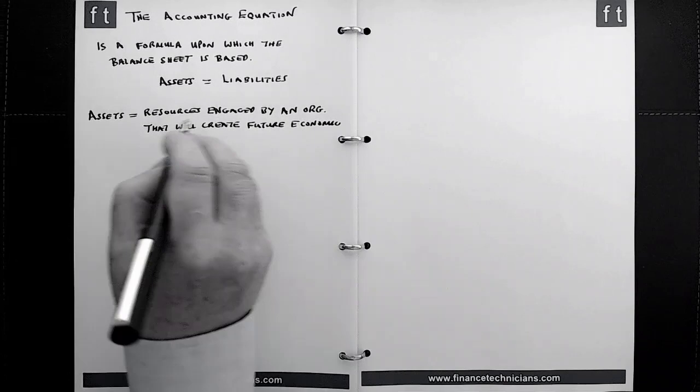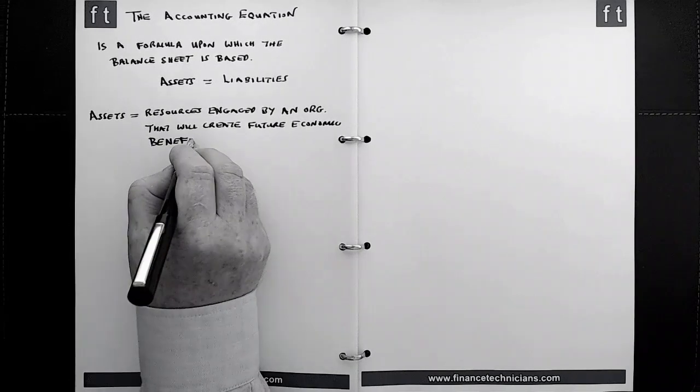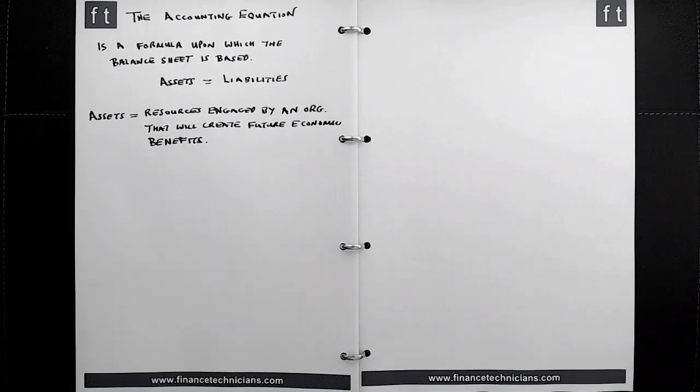If you have an organization or a business and it has a factory that produces, let's say, tables, the machinery that are used in the long term to create those particular tables are assets of the business because the business is engaging them to produce products that can be sold for a monetary value, and therefore it's creating future economic benefits.